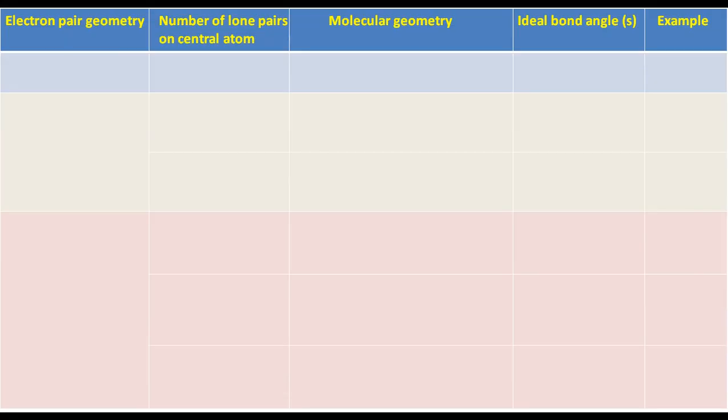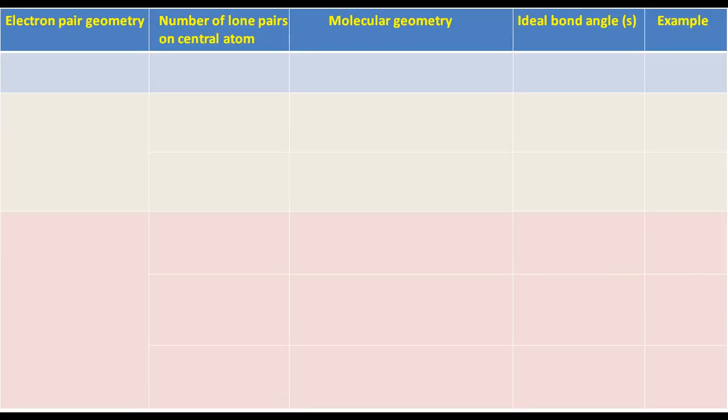Now we will learn the relation between the electron pair geometry and molecular geometry. Electron pair geometry and molecular geometry may be the same or different depending upon the number of lone pairs on the central atom. Let us make a table with five columns: electron pair geometry, number of lone pairs on the central atom, molecular geometry, ideal bond angle, and examples.